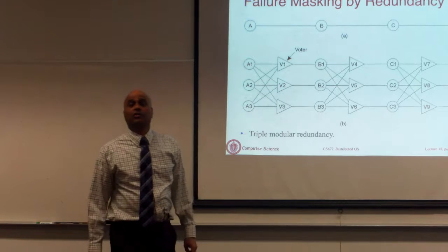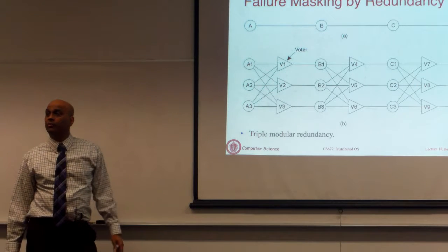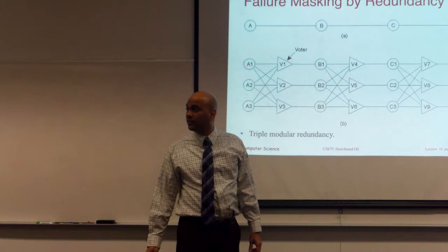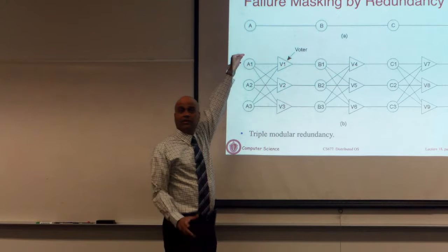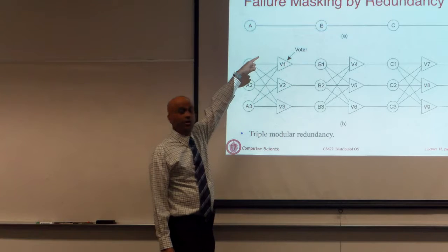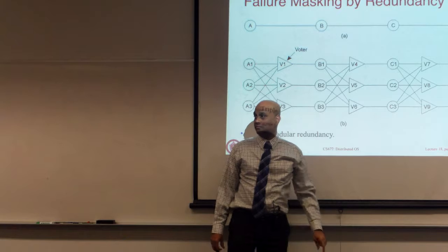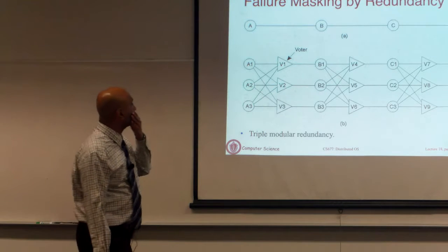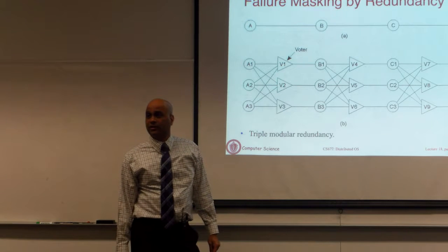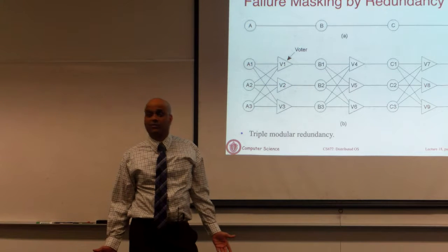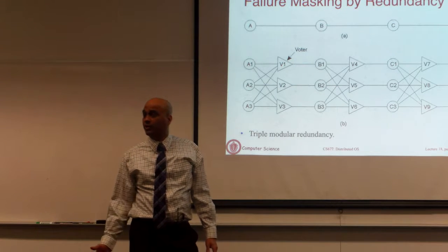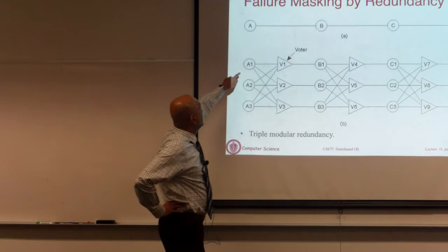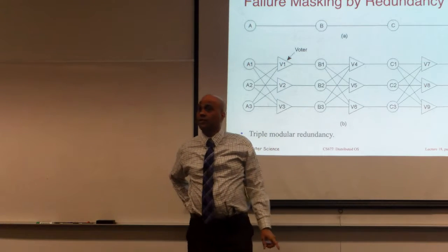I will show how some of these ideas work using a simple technique from fault-tolerant circuit design. A circuit takes one bit of input, does computation, and feeds the result to the next stage. If any stage A, B, or C fails, the whole circuit fails. The solution shown is to replicate each stage — three copies of A, three copies of B, three copies of C. There is a voter that takes the outputs of the previous stage and picks the majority.